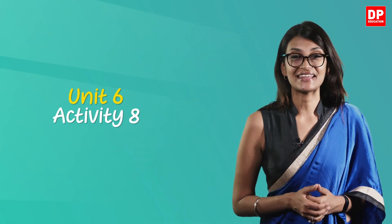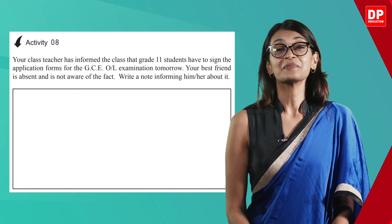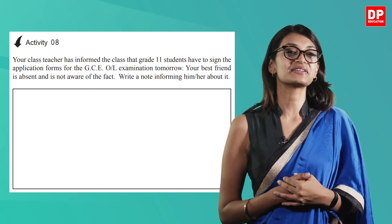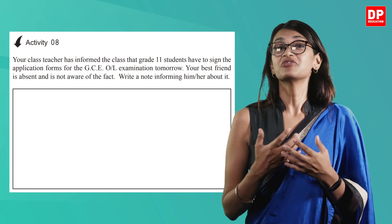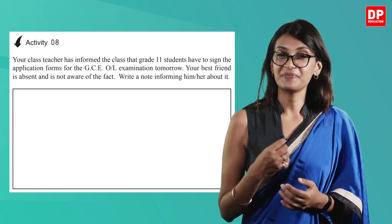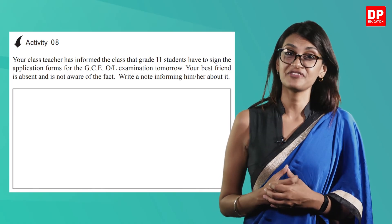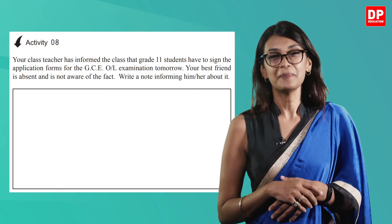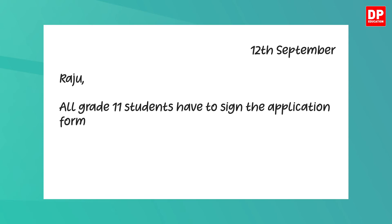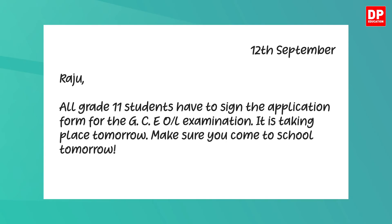Now turn to page 65 in your student workbook, Unit 6, Activity 8. Your class teacher has informed the class that Grade 11 students have to sign the application form for the GCE O-Level examination tomorrow. Your best friend is absent and not aware of this. Write a note informing him or her about it. Let's do this together: '12th September. Rajoo, all Grade 11 students have to sign the application form for the GCE O-Level examination. It's taking place tomorrow.'